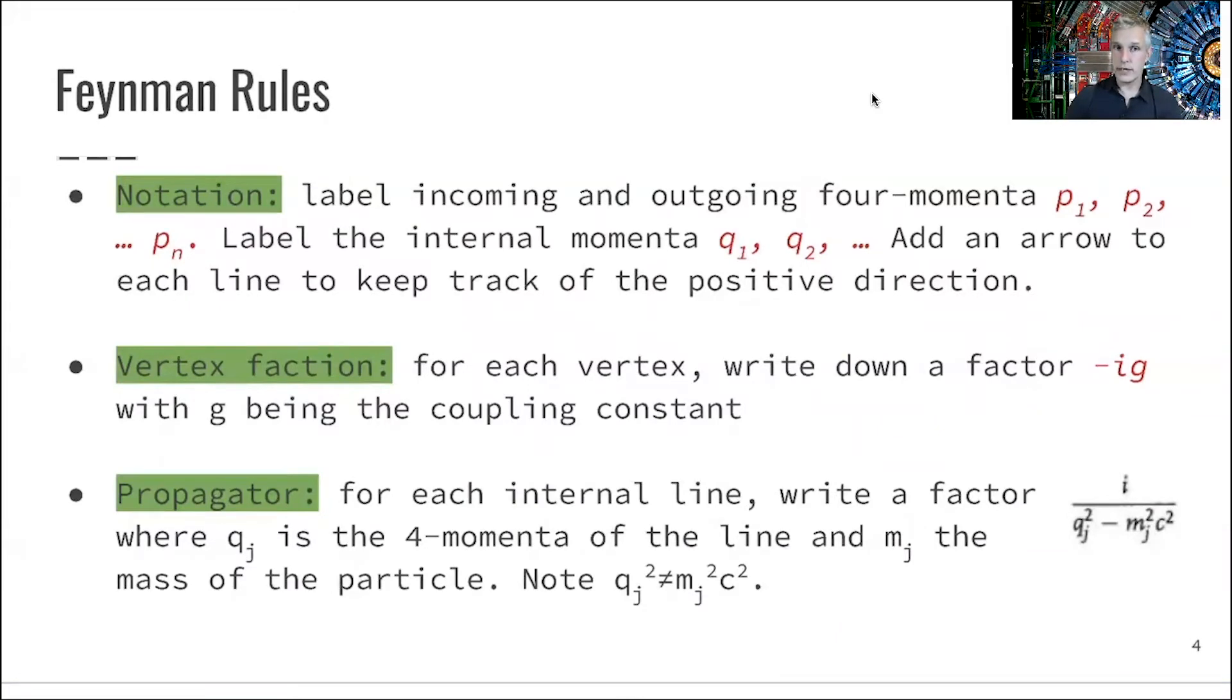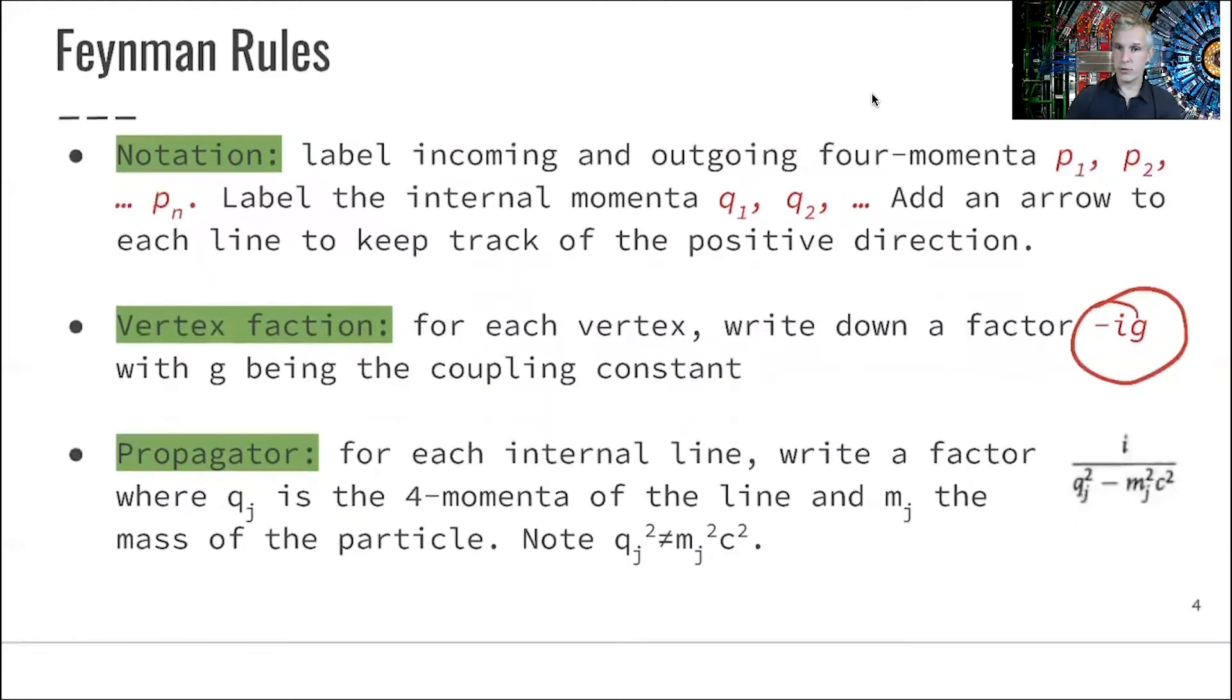For each vertex, we have a factor. We write down this factor minus iG, where G is the coupling constant. So this is a measure of the strength of the interaction involved.